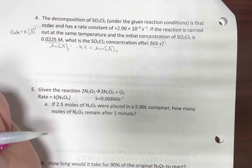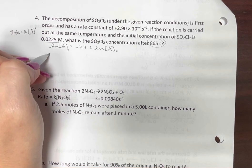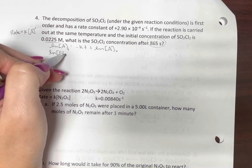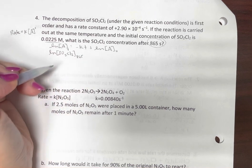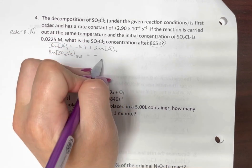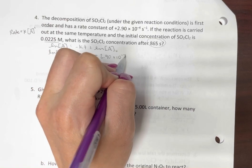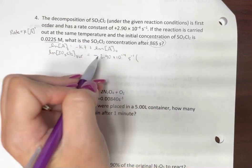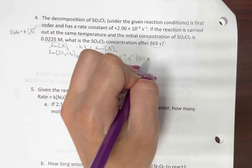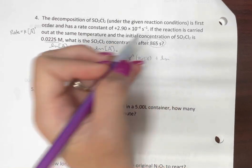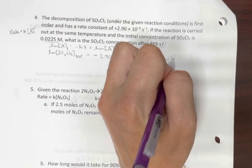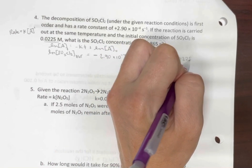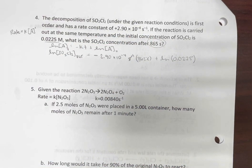So from here it's really just plug and chug. It is not that difficult. So we know natural log of SO2Cl2 at time 865 seconds is going to equal negative and here's our K 2.90 times 10 to the negative 4th and that's inverse seconds. That's not a 5, that's an S. Times 865 seconds. So they cancel out plus natural log of our initial concentration 0.0225. Since we're dealing with natural logs here, I'm not going to put the molarity on there. Remember to add the concentration units back later.